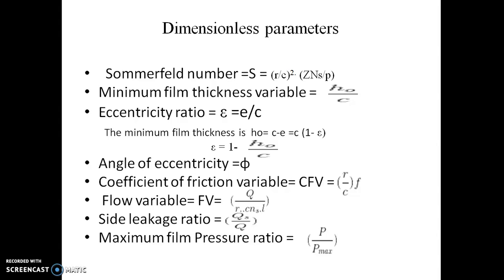Next come dimensionless parameters. The first one is Sommerfeld number, denoted by S. It is the most important dimensionless parameter. It contains all the variables which are controlled by the designer. It is given by S = (r/c)² × (μns/p), where r is the radius of shaft, c is the radial clearance, μ is the viscosity, n is the speed in rps, and p is the unit bearing pressure.